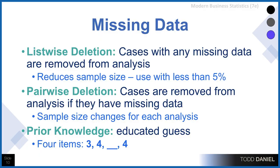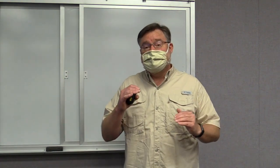A second option is pairwise deletion, where you remove cases only from the analyses where they have missing data. That sounds like a good compromise; however, what it will do is leave you with different sample sizes for various analyses. So you run your first t-test and there are 100 participants, but then you run a correlation and there are only 96 participants — your sample size fluctuates throughout your analysis because there are different numbers of people in each analysis.